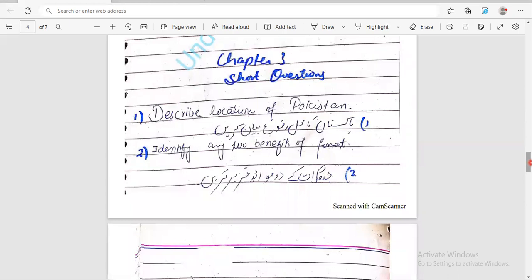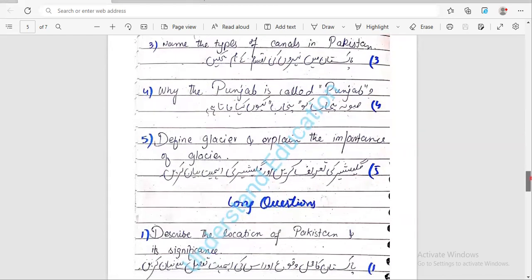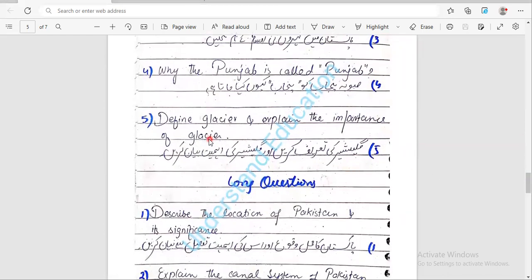Chapter number three short questions: Describe the location of Pakistan - very important. This question will be very important. Next: identify any two benefits of forests. Then name the types of canals in Pakistan. Why is Punjab called Punjab? Why do you want to tell this? In Punjab, why is Punjab called Punjab? This is an informational question and you can come to the board. Next: define glacier. Explain the importance of glacier.